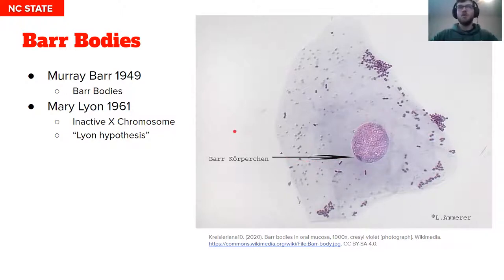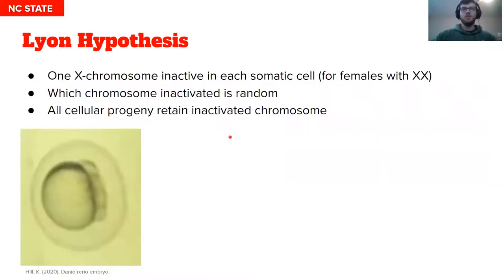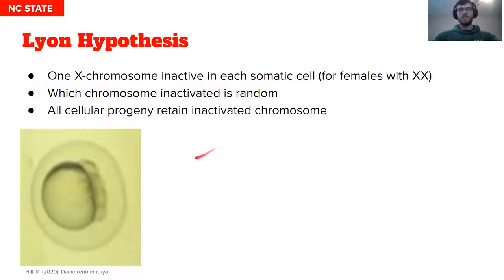In 1961, Mary Lyon hypothesizes that it's one of the X chromosomes being inactivated in female cells. So the way this would work is that one X chromosome is going to be inactive in every non-sex cell. And which one is inactivated is going to be random, and all cells from a cell line are going to retain that inactivated chromosome. So every time that cell duplicates, it's going to retain which one is active and which one is inactive.